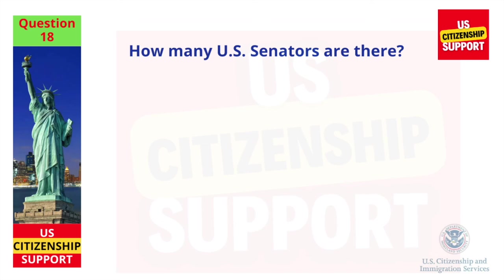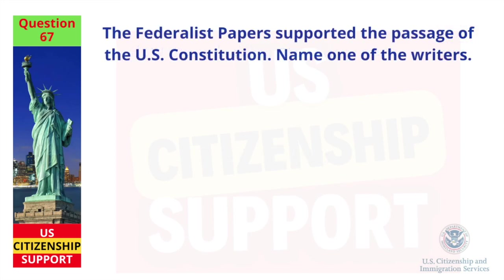How many U.S. senators are there? One hundred. The Federalist Papers supported the passage of the U.S. Constitution — name one of the writers. James Madison.